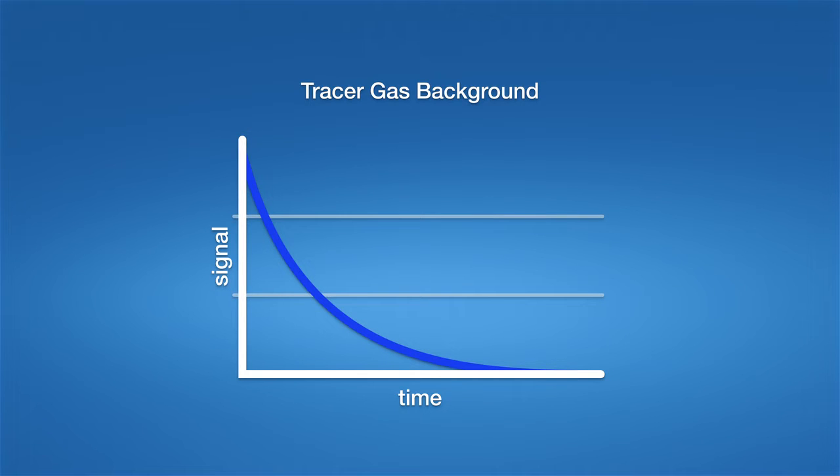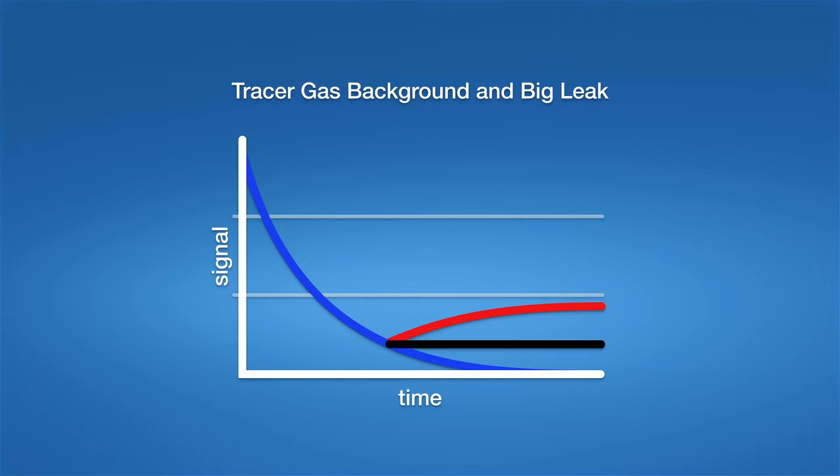Let's assume our test object inside the vacuum chamber has a rather big leak. After applying tracer gas to the test object, the red curve will be shown instead of the blue curve. In order to only see the red curve of the leak and not the blue curve of the natural background, we press zero before applying tracer gas to the test object.